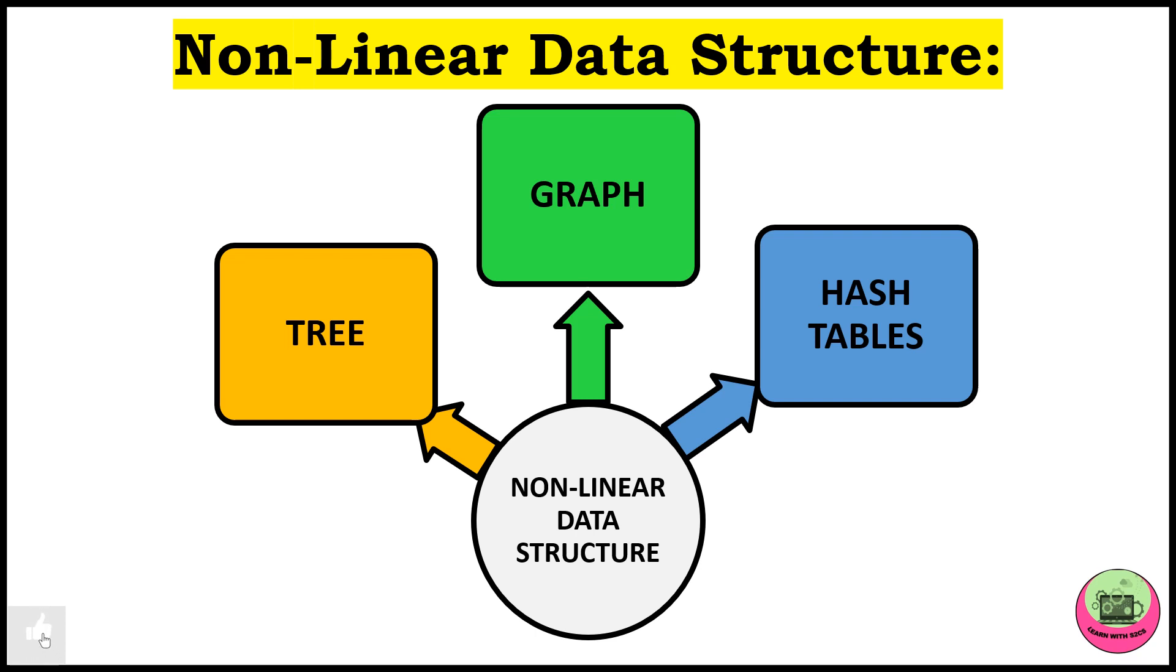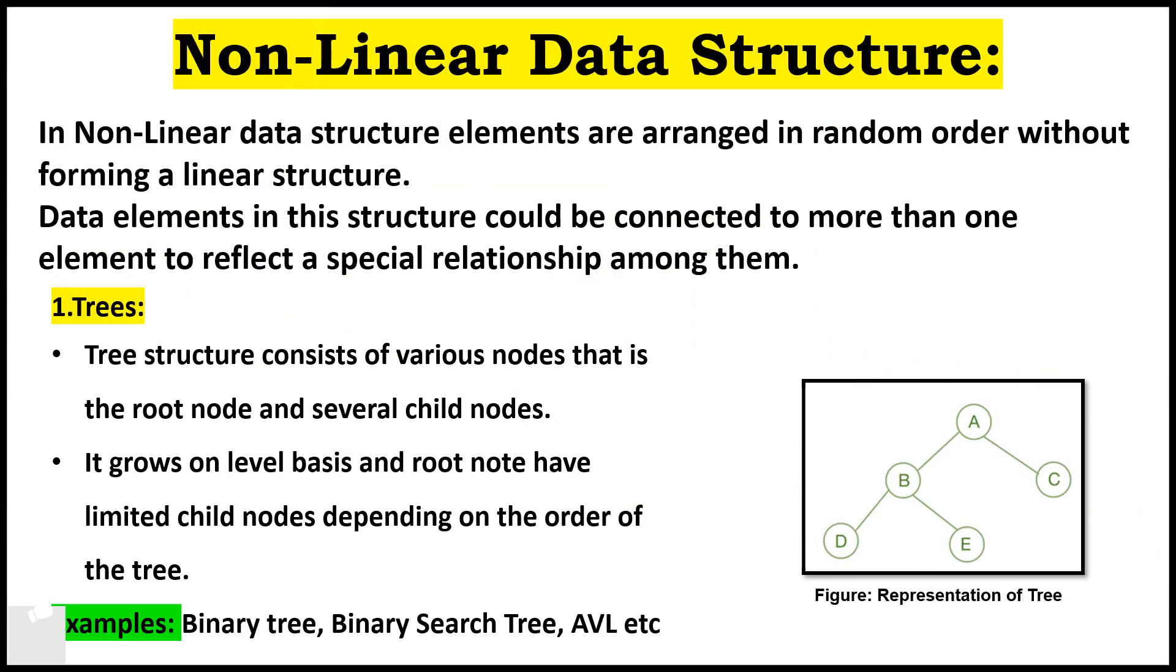Next is non-linear data structures. As the name tells you, the elements are not in correct order. In random order the data is stored. They are tree, graph, hash tables. Data elements in this structure could be connected to more than one element to reflect a special relationship among them.